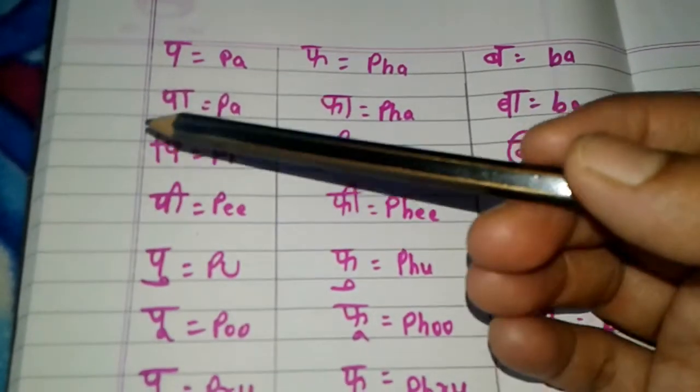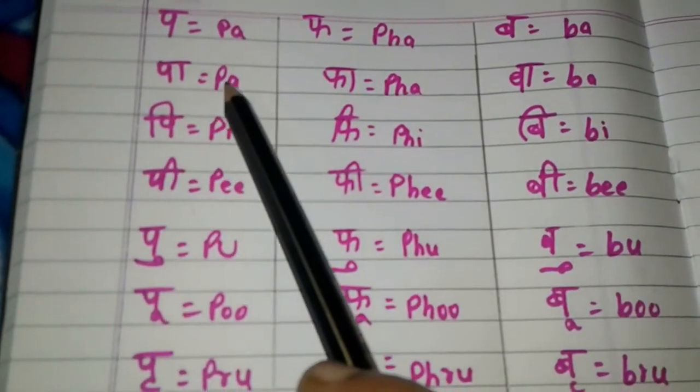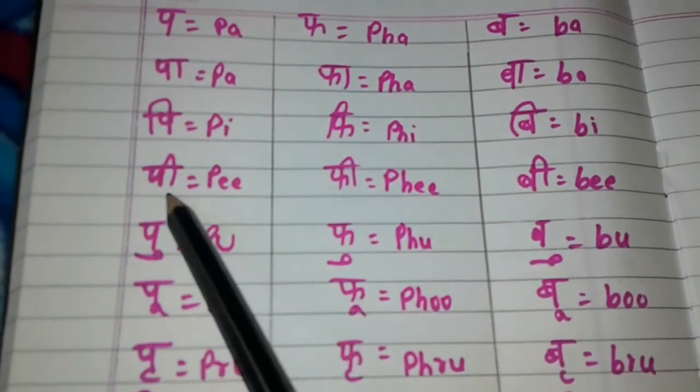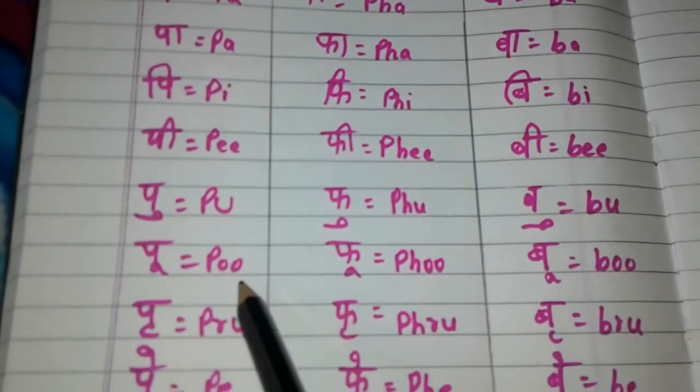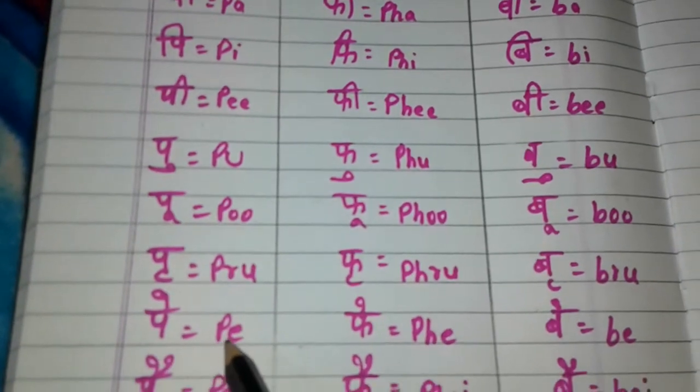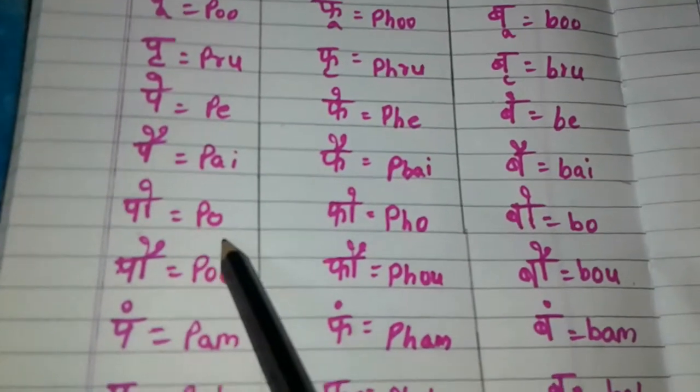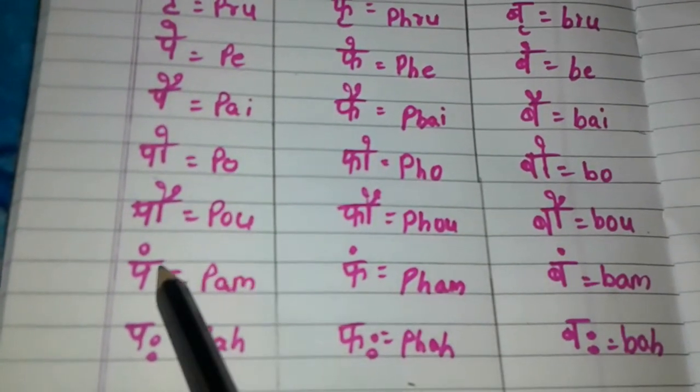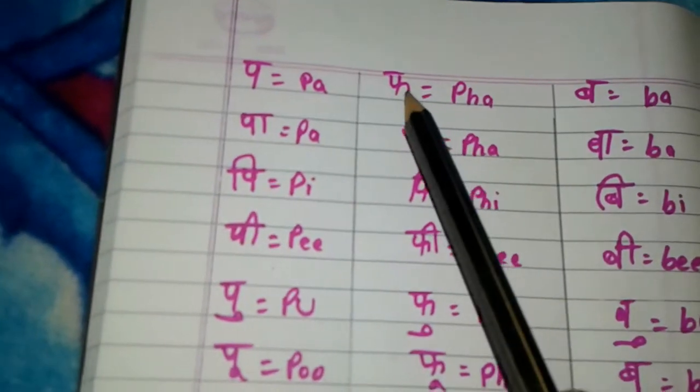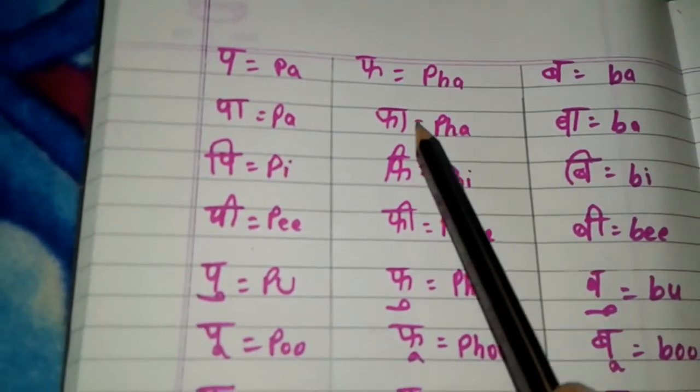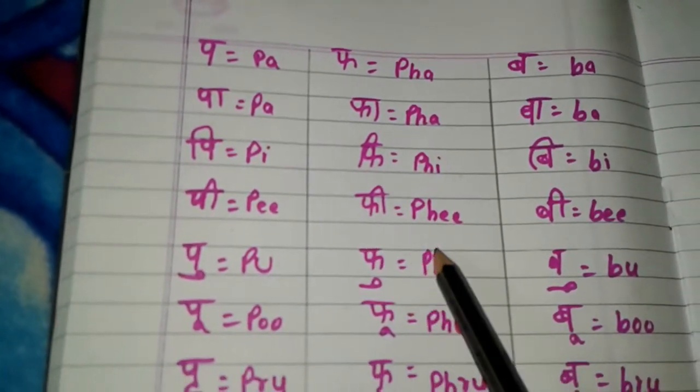Okay, first class. Baha, P-A-H. Okay. The next letter. Fa, P-H-A. Fi, P-H-I. Fi, P-H-E-E.